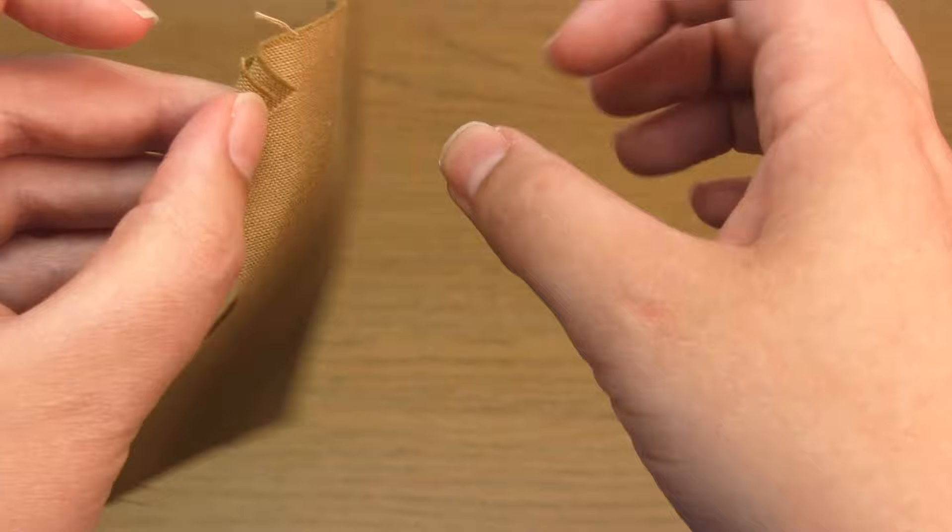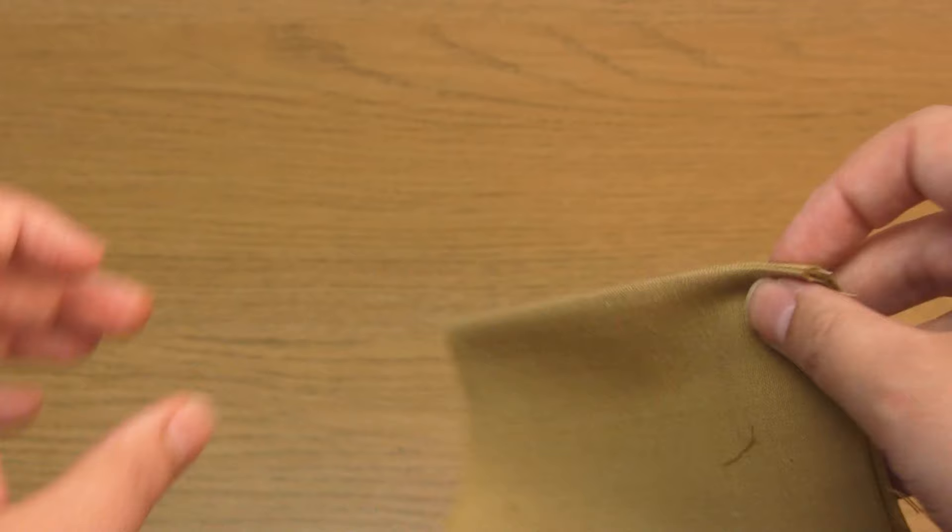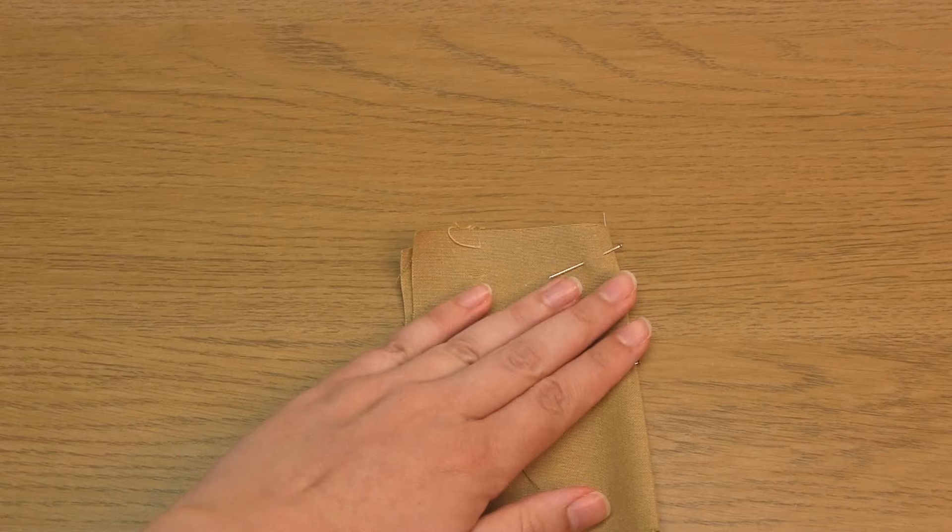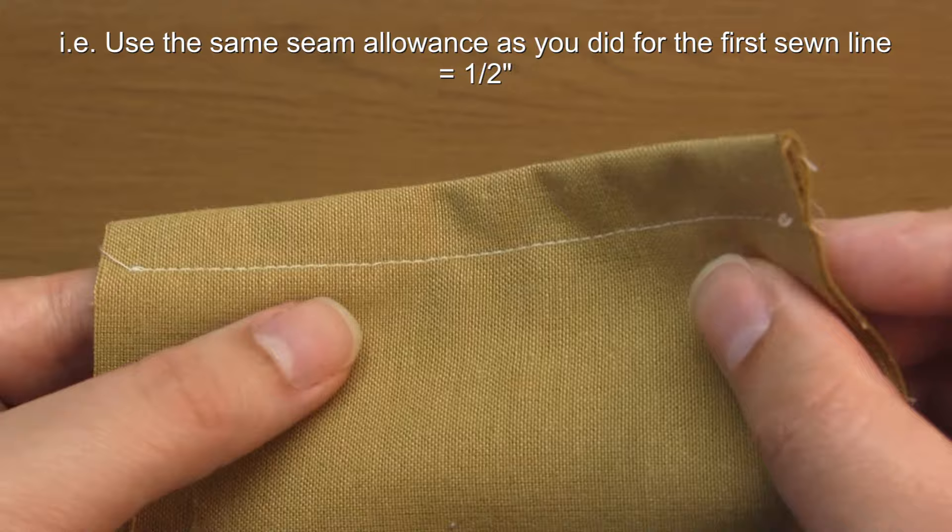Pin the fabric in place and then sew the final line of stitching. This line needs to be a quarter of an inch further in from the edge than the raw edges. So since we have a quarter of an inch of raw edges, we now sew half an inch from the edge.